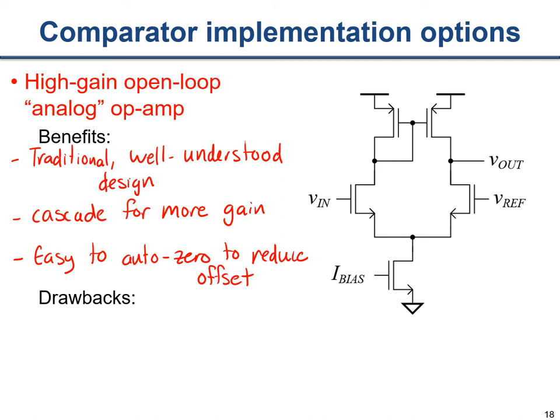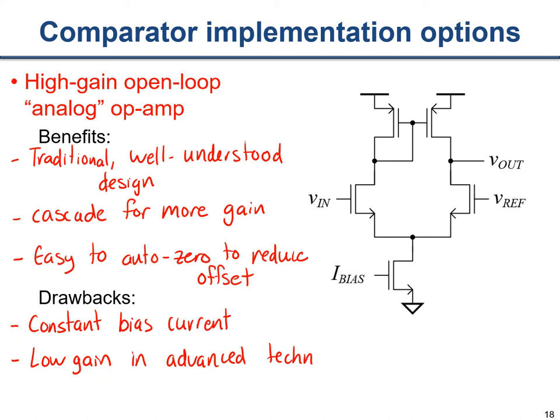The drawbacks of the differential amplifier comparator are: it consumes a constant bias current, making it potentially energy expensive. In advanced CMOS processes, one stage has fairly low gain, requiring more cascading and therefore more power.